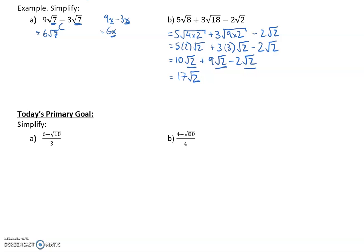let's simplify (6 - √18)/3. How do we do that? We simplify what's under the radical by taking out the largest perfect square. √18 is √(9×2), and the square root of 9 is 3, so we're left with √2. That gives us (6 - 3√2)/3.